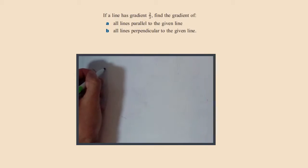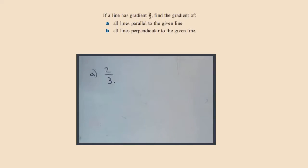So all lines parallel to a line with gradient two-thirds will have gradient two-thirds, and that's it. Part B: well, it's a bit more complicated.